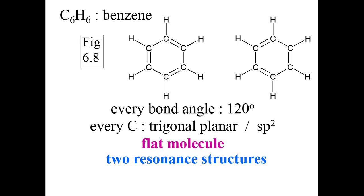While every carbon-hydrogen bond is a single bond in both structures with a bond order of one, the carbon-carbon bonds are different. Pick any carbon-carbon bond, for example, the one on the left.